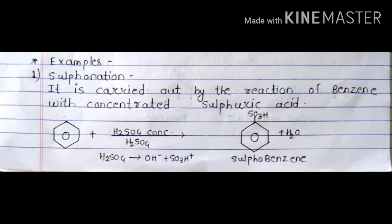The reaction is benzene treated with concentrated H2SO4. In this reaction, H2SO4 breaks into O minus and SO3H plus. The product obtained will be sulfonylbenzene, and one H is taken from the benzene. From H2SO4, O minus is taken and it becomes H2O.